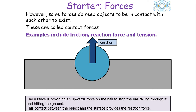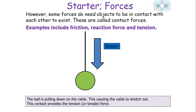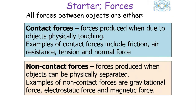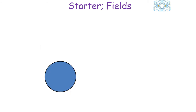The surface provides an upwards force on the ball to stop it falling through — this contact provides the reaction force. When a ball pulls down on a cable, the cable stretches, providing the tension or tensile force. So all forces are either contact forces — friction, air resistance, tension, normal force — or non-contact forces such as the gravitational force, electrostatic force, and magnetic force.